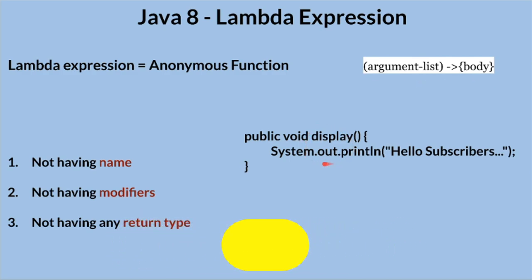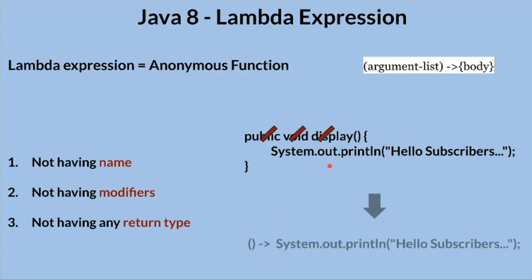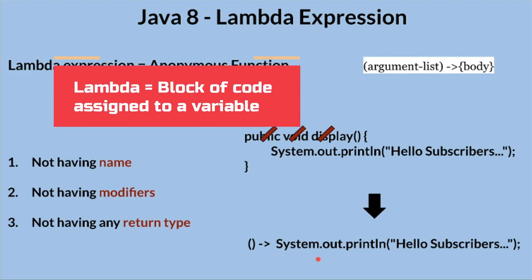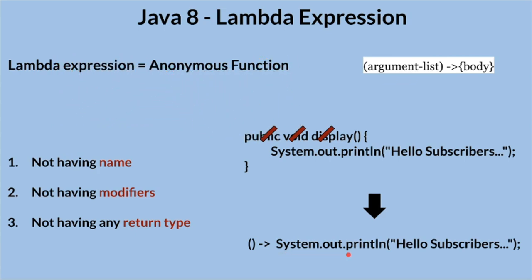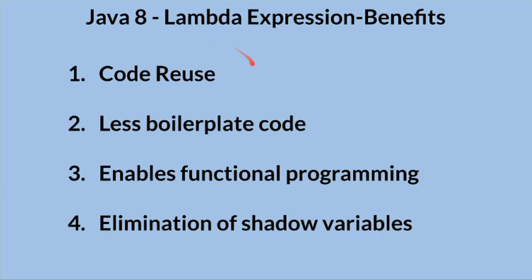For example, in this function if we remove the modifier, the return type, and the name, it becomes a lambda expression — a block of code that can be assigned to a variable so we can pass it as an argument to another function. The benefits of lambda expressions are: we can reuse the code, reduce boilerplate code, enable functional programming, and eliminate shadow variables — the variables created temporarily during processing.